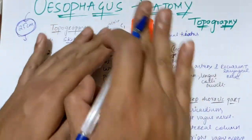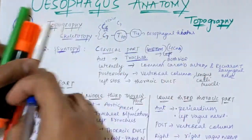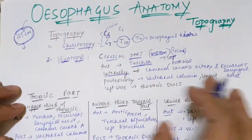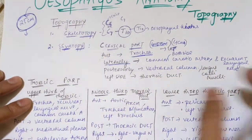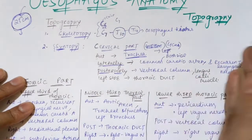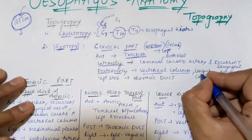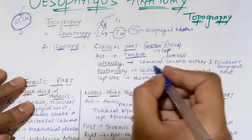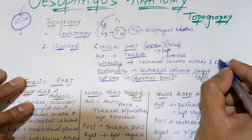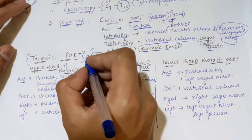Laterally, on both sides, there is the common carotid artery. Posteriorly, there is the vertebral column — the most posterior structure — and the longus colli muscles. On the left side specifically, you can see the thoracic duct. On both left and right sides in the cervical part, you can see the recurrent laryngeal nerve.